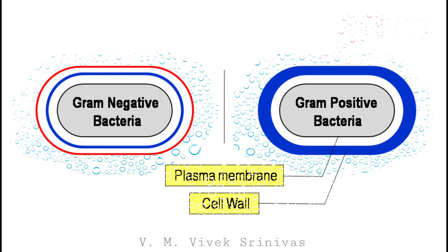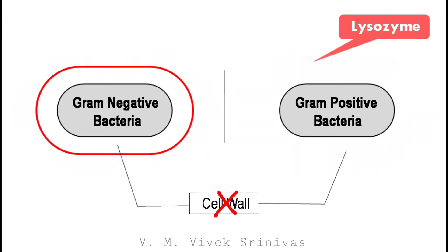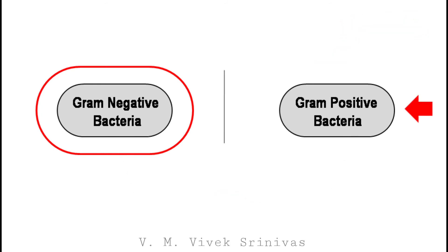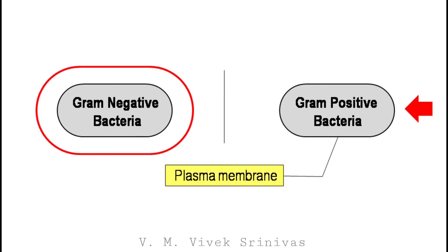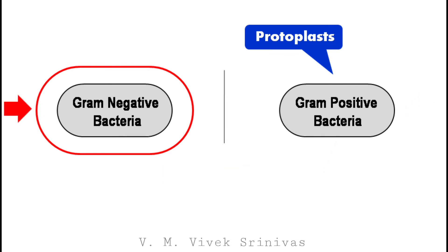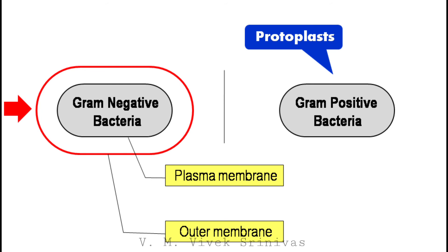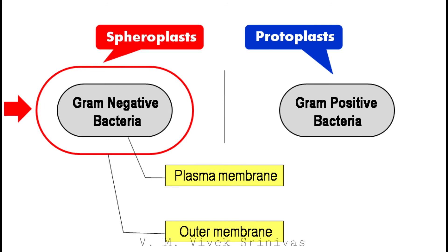Once these bacteria are treated with lysozyme, it causes damage to the cell wall. As a result of the damage to the cell wall by lysozyme, the gram-positive bacteria loses the cell wall but is still surrounded by the plasma membrane, and they can carry out their metabolism. Such structures are referred to as the protoplast. The damage to the cell wall of the gram-negative bacteria caused by lysozyme is not as extensive as in gram-positive bacteria. The gram-negative bacteria retains the layer of the outer membrane and the plasma membrane. Such structures are referred to as the spheroplast.